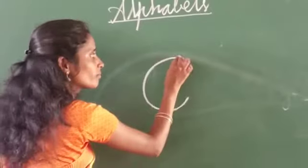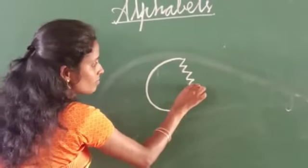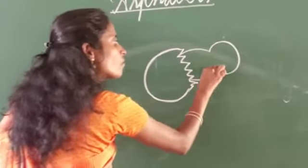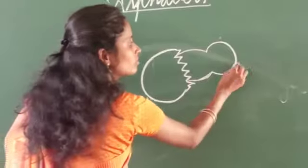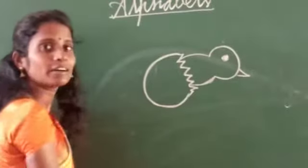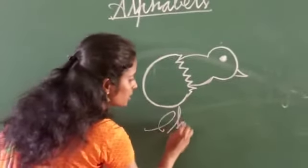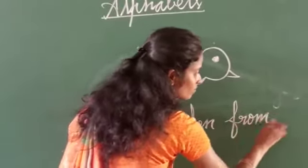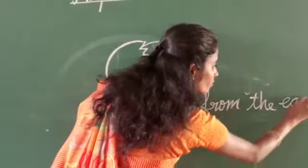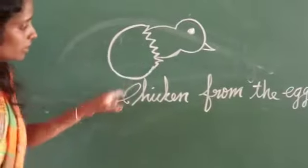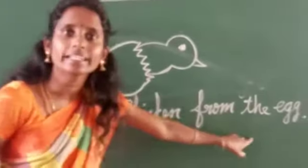C. What is this? Chicken from the egg. This picture is chicken from the egg. Next we go to D.